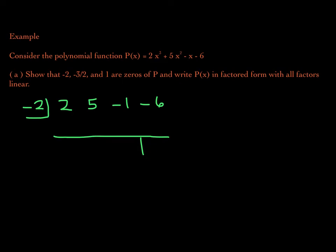Let's do it. Bring down the 2. Negative 2 times 2 is negative 4. 5 minus 4 is 1. Negative 2 times 1 is negative 2. Negative 1 plus negative 2 is negative 3. Negative 2 times negative 3 is positive 6. And there it is — remainder 0. So we just showed that negative 2 is a zero. Because negative 2 is a zero, we know that (x + 2) is a factor.